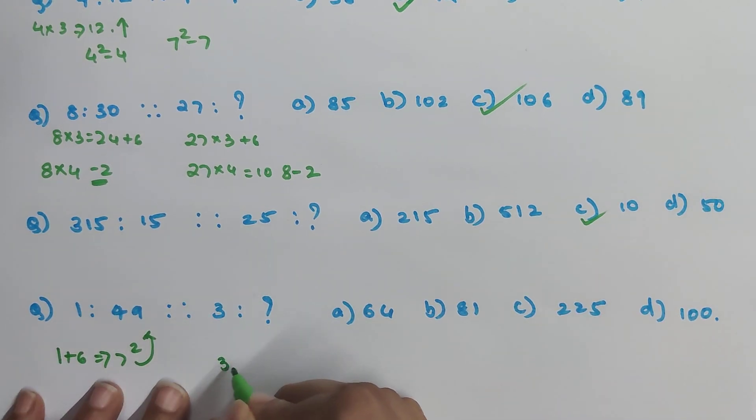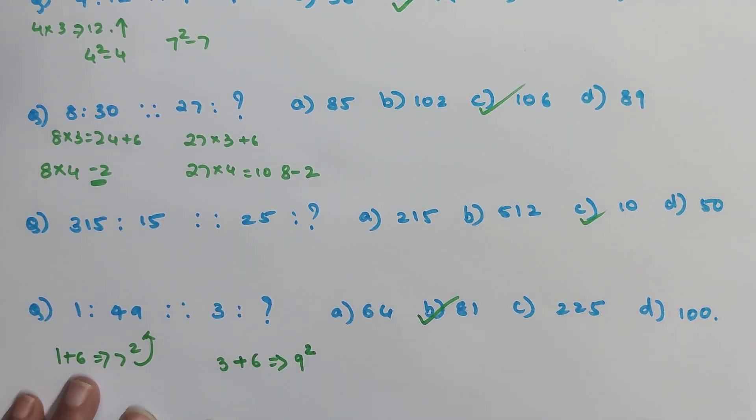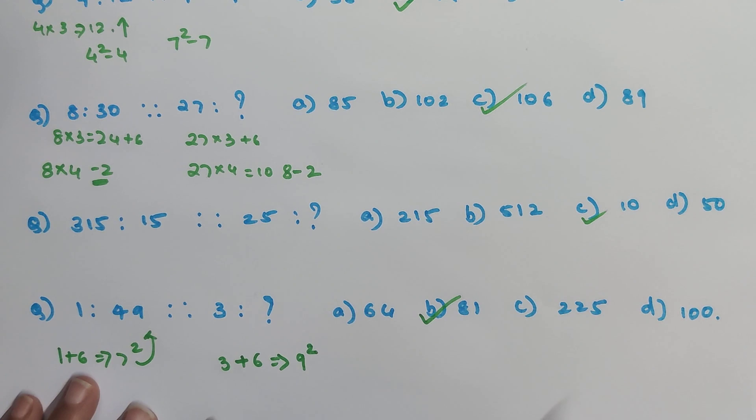So now 3 plus how much? 6. That is going to get you what? 9 and 9 square is what? 81. So that is your answer.